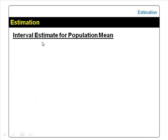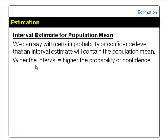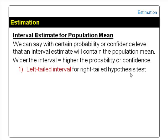However, with an interval estimate, which is also called a confidence interval, we can say with a probability or confidence level that the interval will contain the population mean. The wider the interval, the higher the probability, or the more confident we are, that the interval will contain the population mean.